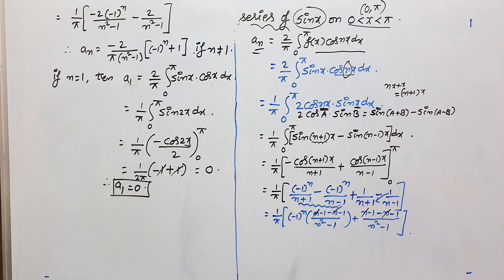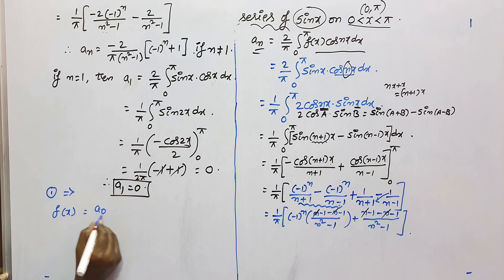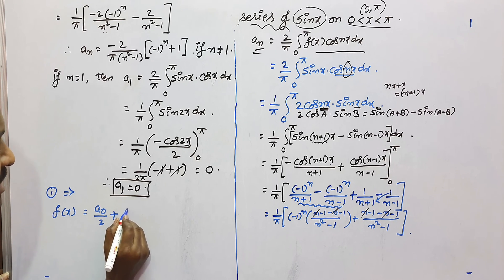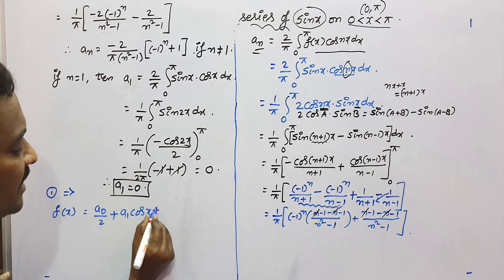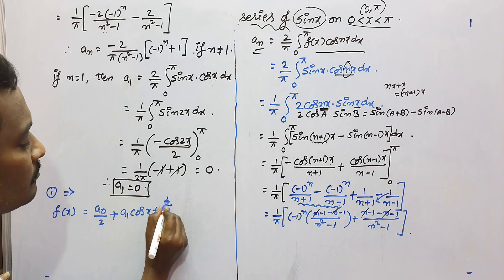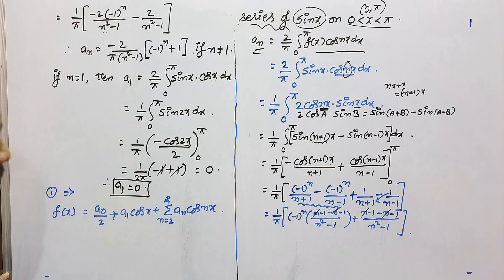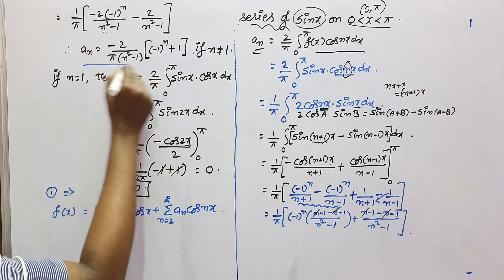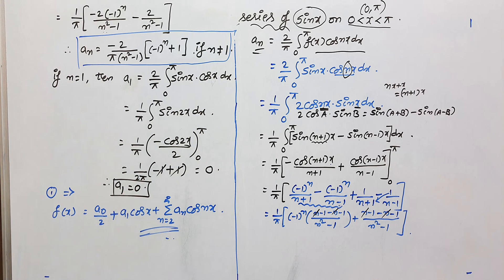Now we substitute all values into the half-range cosine series formula. f(x) = a0/2 + a1·cos(x) + Σ(n=2 to ∞) an·cos(nx). Substituting a0/2 = 2/π, a1 = 0, and an = −2((−1)^n+1)/[π(n²−1)] for n≥2, we obtain the required half-range cosine series of sin(x). In the next video, more problems will be covered. Thank you.